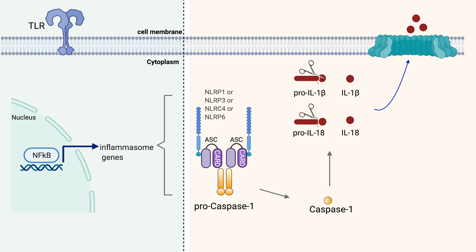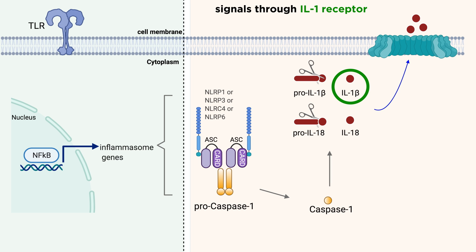The mature forms of these proteins, IL-1 beta and IL-18, are then potent stimulators of inflammation in other cells. IL-1 beta signals through the IL-1 receptor, which signals similarly to a TLR in that it has a TIR domain, and activates NF-kappaB through MyD88, also inducing transcription of several pro-inflammatory genes.